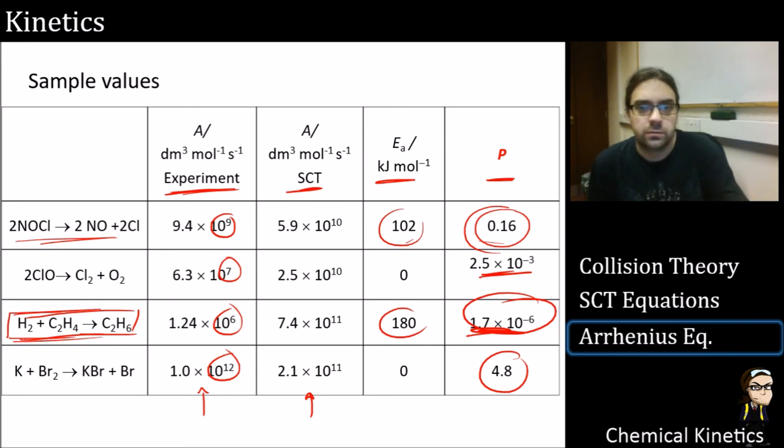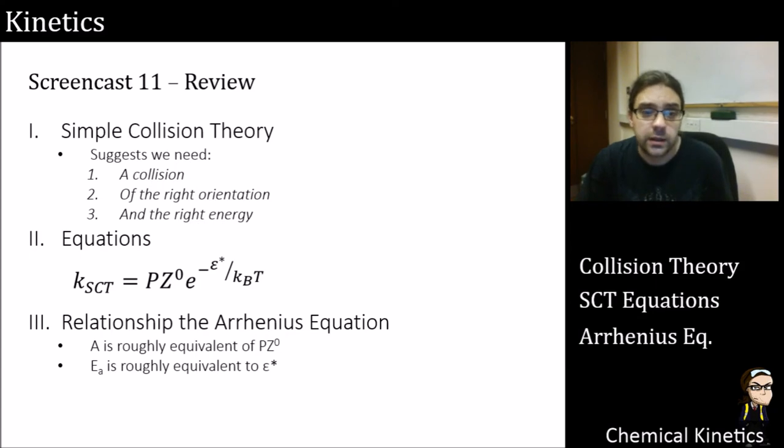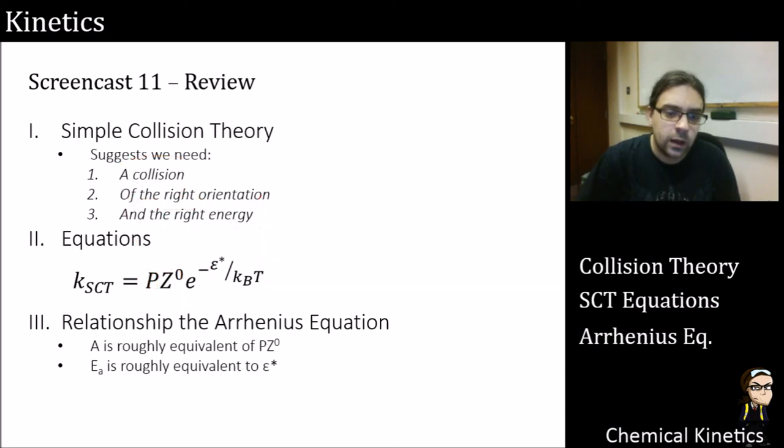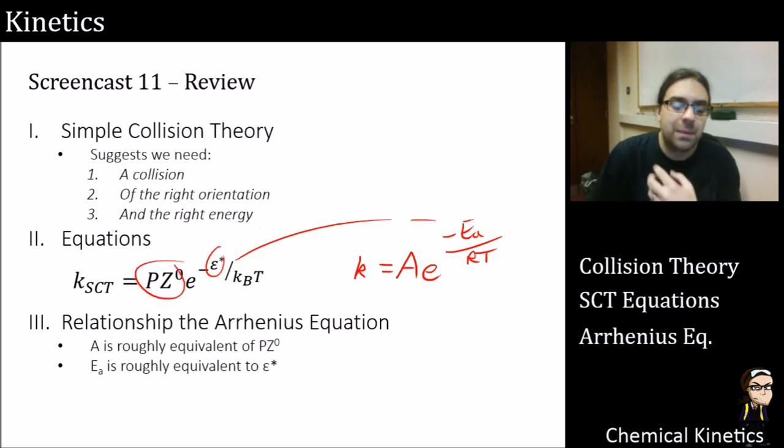Let's review. Simple collision theory says we need a collision of the right orientation and of the right energy. When we build that into an equation, the collision, of the right orientation - there's our steric factor, of the right energy - there we go, the three components of our simple collision theory equation. And the relationship to the Arrhenius equation - we can say k is equal to A*e^(-E_a/RT). You can see sort of rough equivalents here. There is our Boltzmann factor, very similar to the activation energy. P and z^0 are the equivalent of the pre-exponential factor here. And again, just switch the Boltzmann constant and the gas constant, which just means we're dealing with either an individual molecule or the molar scale.